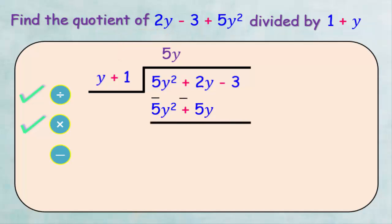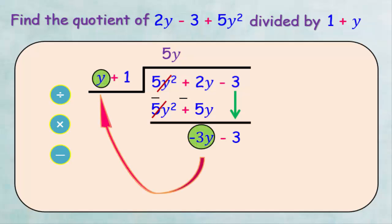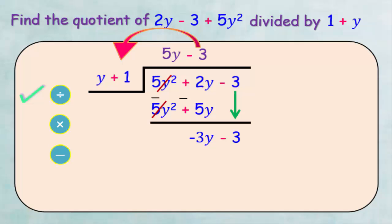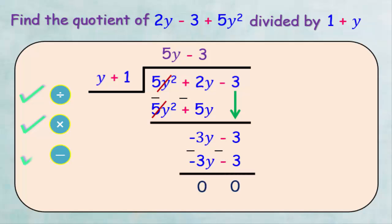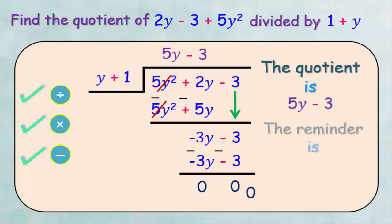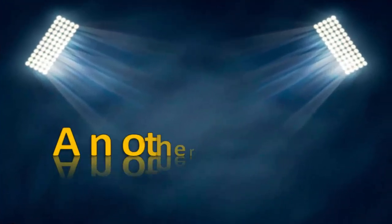We subtract the two expressions, giving us negative 3y. We then repeat the steps: divide negative 3y by y to get negative 3. Multiply negative 3 by y plus 1 to get negative 3y minus 3. Subtract to get 0. The division is finished; the quotient is 5y minus 3 and the remainder is 0.